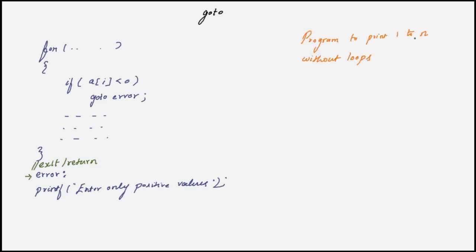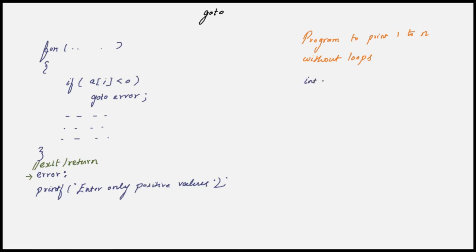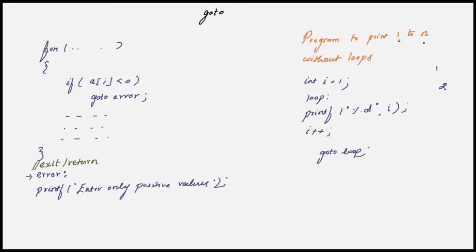Say you have to print 1 to n without using loops — you can use goto as a loop. Declare i and initialize it to 1. Put a label, say loop:, then print i, increment i. Use an if condition: if i is less than or equal to n, then goto loop. This makes it jump back and print the next value. If the condition is false, it falls through and the program ends. Running this with input 5 prints 1 2 3 4 5.